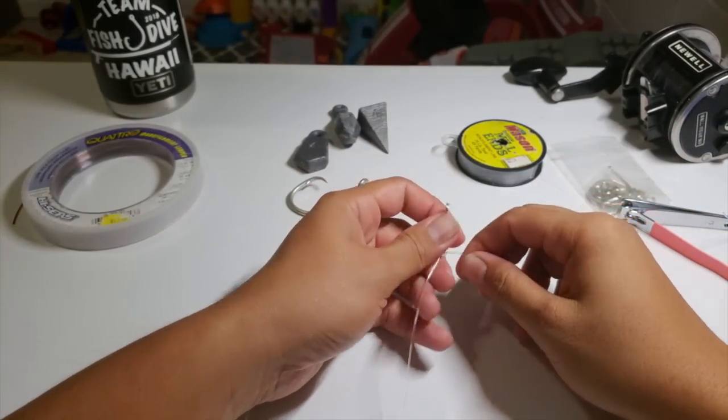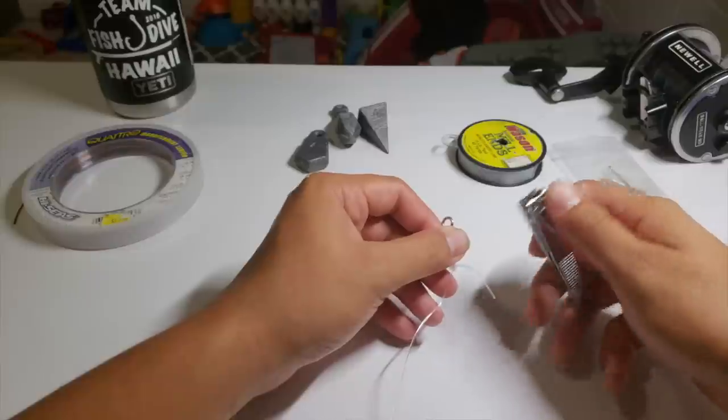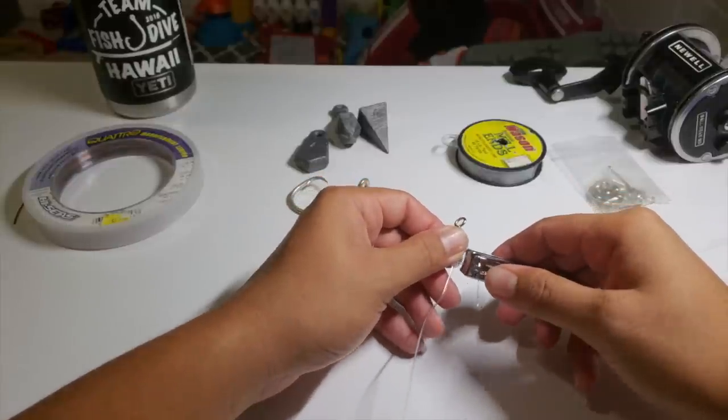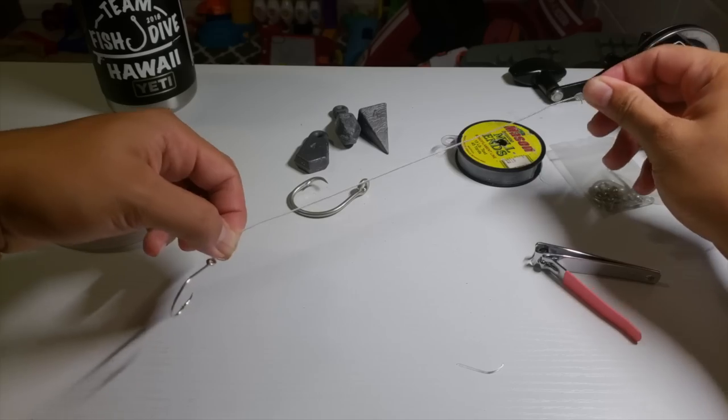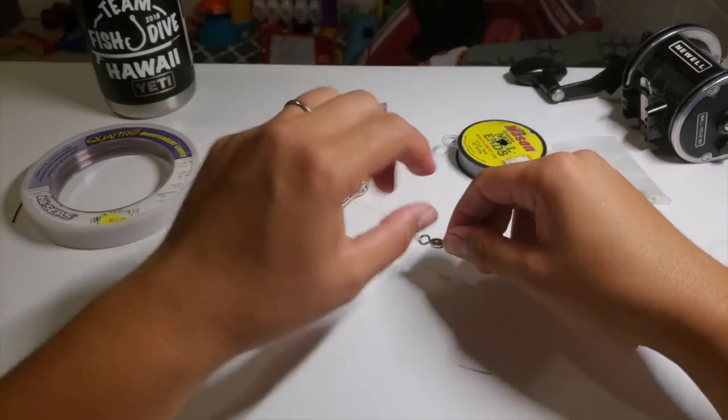So again, both sides, uni knots, and I will go over that in another video. I'm going to cut the excess here. So now we have our leader all ready to go. Now let's do the lead line.